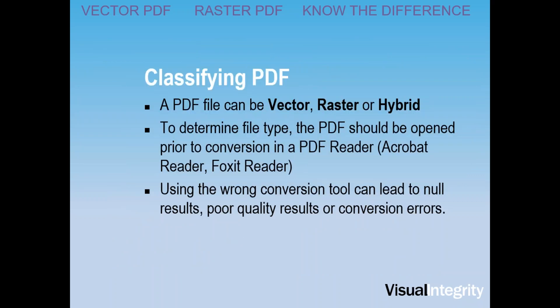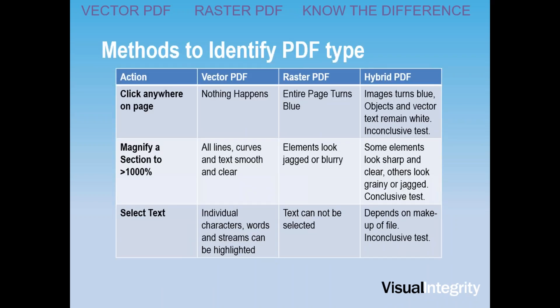To classify PDF files, there are really three types: the vector PDF, the raster PDF, and the hybrid PDF. To determine the file type, open the PDF in a reader like Acrobat or Foxit. If you use the wrong conversion tool, you can end up with no results, poor results, or inaccurate results. Methods to identify the PDF file: once you open it, you can click anywhere on the page, magnify a section, or try to select text. Each of those will give you an idea of whether you have a vector, raster, or hybrid PDF file.